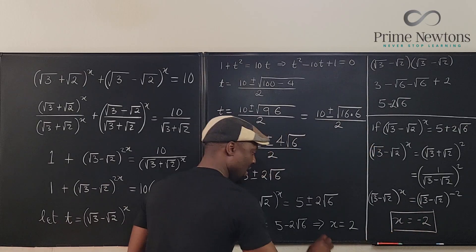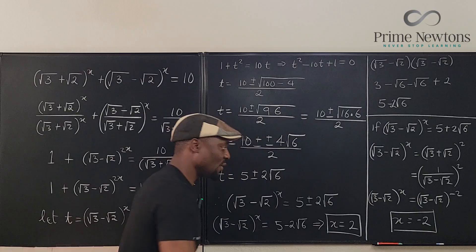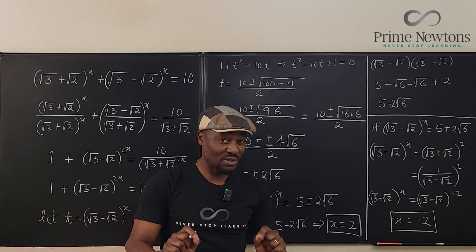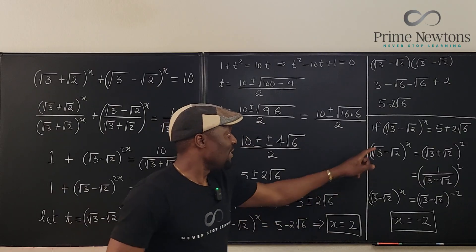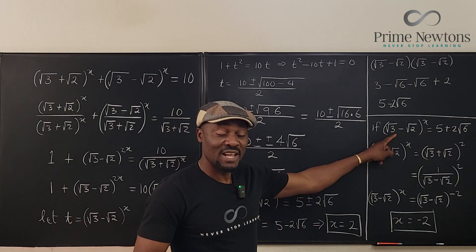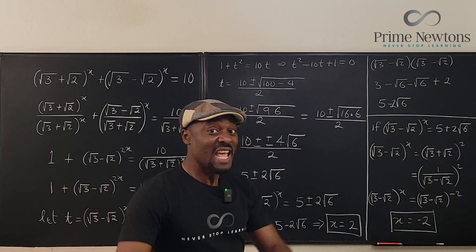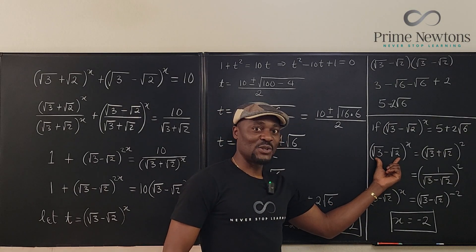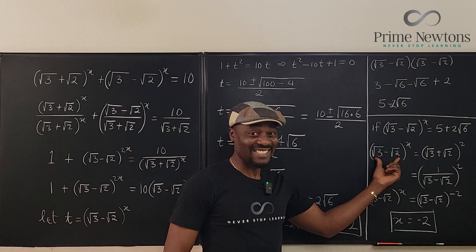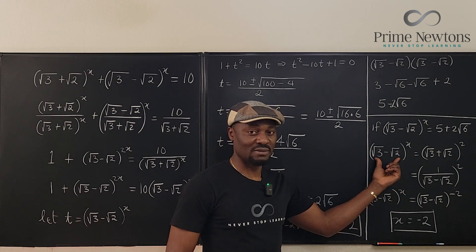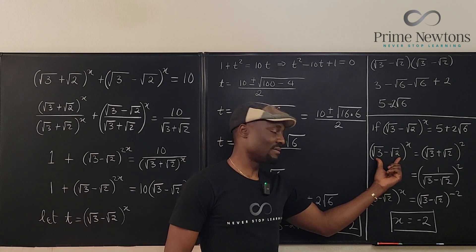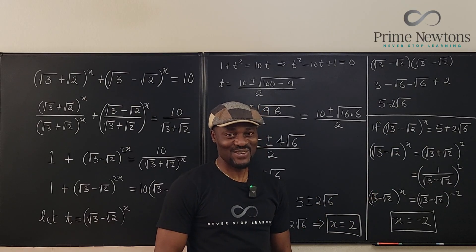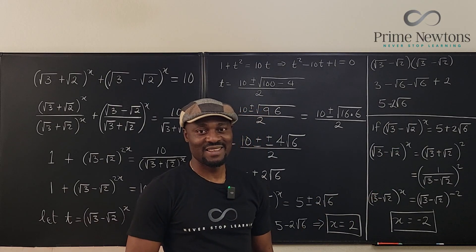So x = 2 and x = −2 are the two possible solutions. The most important insight is that the reciprocal of a surd is equal to its conjugate when the two radicands are consecutive numbers. Never stop learning — those who stop learning stop living. Bye-bye!